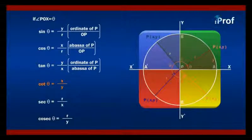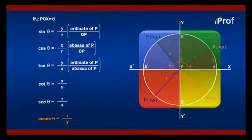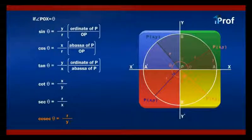Cot theta will be equal to x upon y. That is the reciprocal of tangent theta. Secant theta will be the reciprocal of cos theta, that is equal to r upon x. Cosec theta will be equal to r upon y. That is the reciprocal of sin theta.